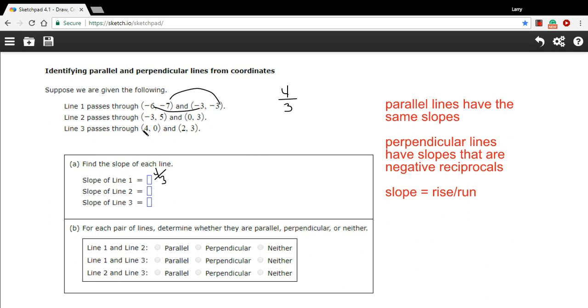All right, let's try line 2 here. The change in the y-coordinates, it goes from 5 down to 3. So that's a negative 2. And the change in the x-coordinates, negative 3 to 0. That's an up 3, a positive 3. So that's negative 2 thirds.